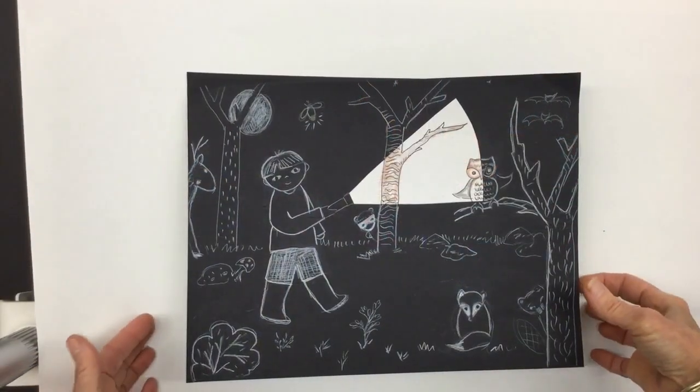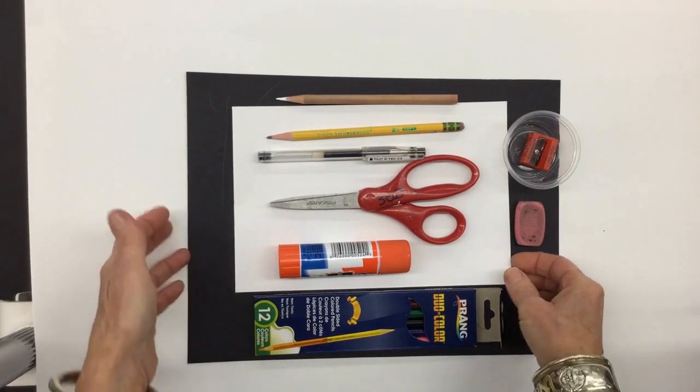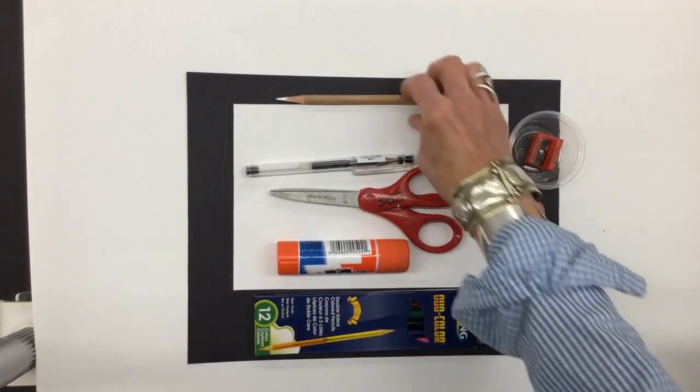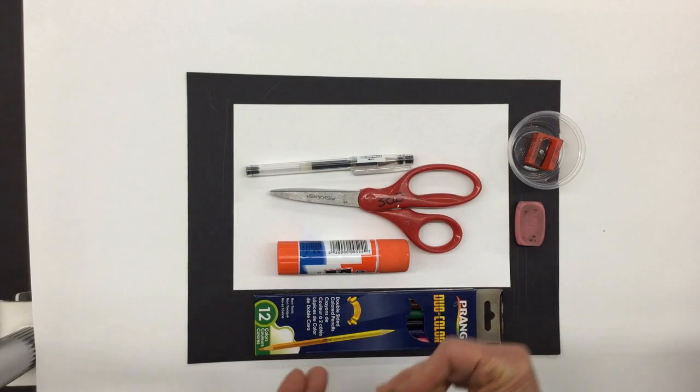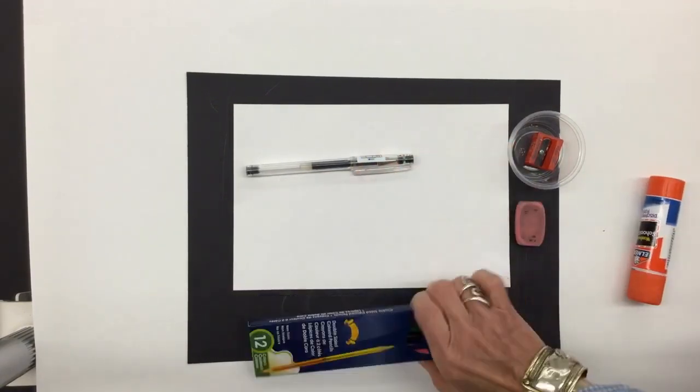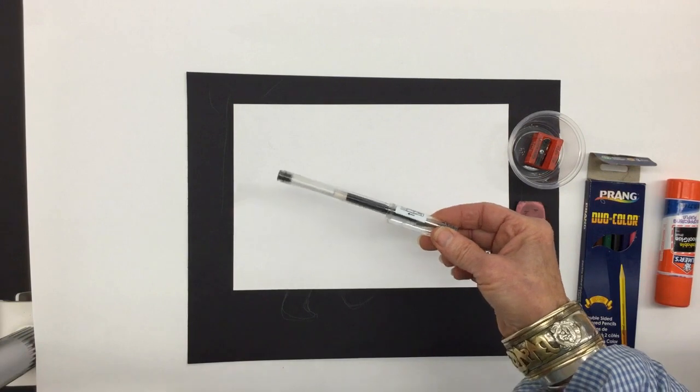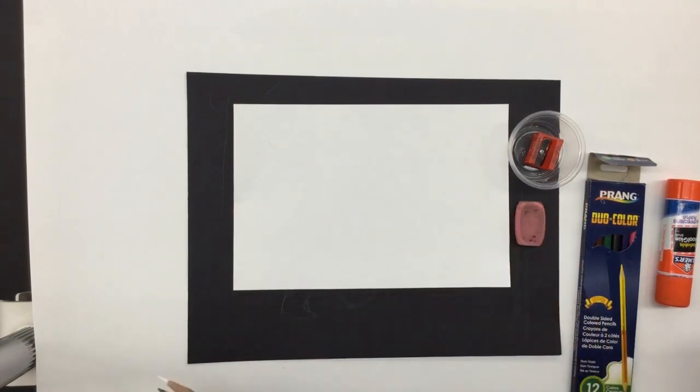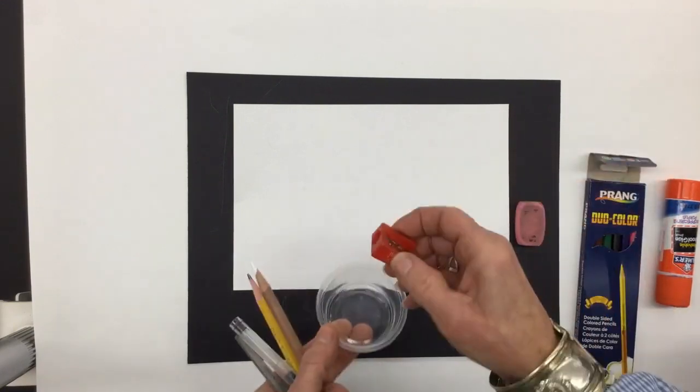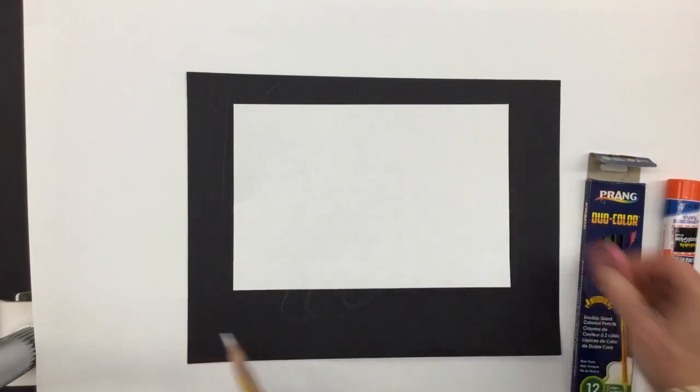So here's what you're going to need for this project. You're going to need a piece of black paper, a smaller piece of white paper, a planning pencil is helpful. You'll definitely need a white pencil, a pair of scissors, your glue stick, and your colored pencils. I also like to have a smaller fine point pen if you have one. Even a little ballpoint pen will work. And today, because I'm going to be using my white pencil a lot, I have a little sharpener and a cup so that I can resharpen as I go along. And I also find an eraser helpful.